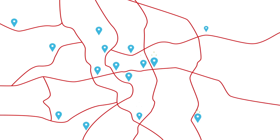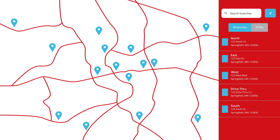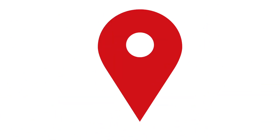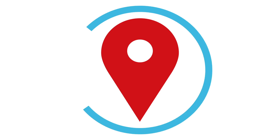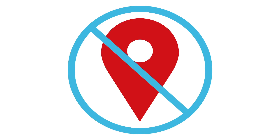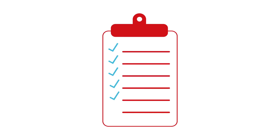Our interactive map helps you find branch and ATM locations nearest to you. If your device's location services are turned off, or your location is unavailable, a general list of branches will appear.